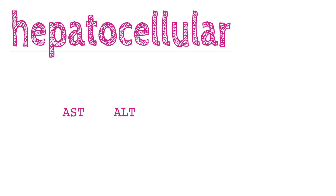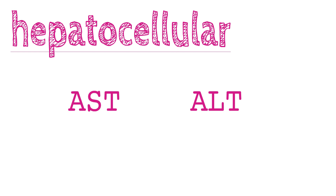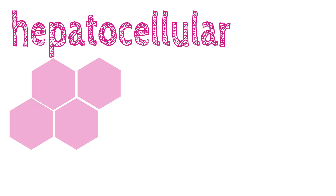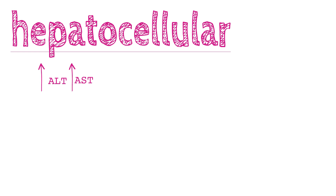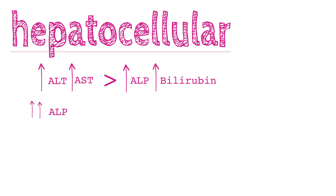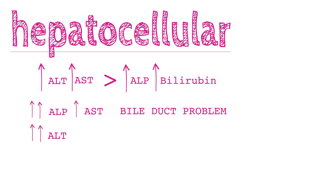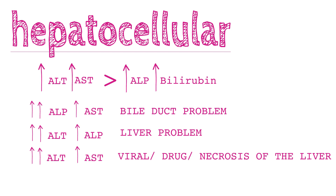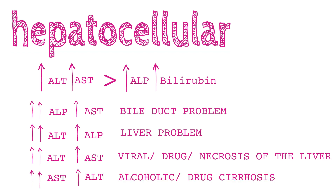A hepatocellular pattern of damage is characterised by an isolated or predominant rise in serum transaminases, because the transaminases reside in hepatocytes, so any damage to the cells will cause a rise in circulating levels. The increase in ALT and AST will be bigger than the increases seen in ALP and bilirubin. When there is more increase in ALP than AST, it indicates a bile duct problem. When the rise in ALT is bigger than that of ALP, it indicates a liver problem. When the rise in ALT is bigger than AST, it indicates viral or drug necrosis of the liver. When the rise in AST is greater than ALT, it indicates alcoholic or drug cirrhosis.